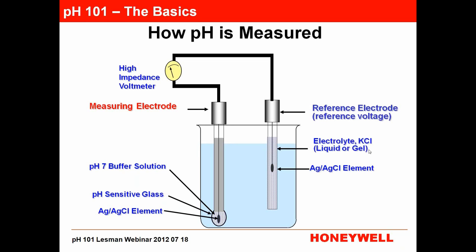We put the reference wire into a potassium chloride liquid or gel, which fixes the voltage potential at the reference electrode so it stays constant. As long as it's constant, it can be compared to the varying voltage of the measuring electrode. Without a connection between the measuring and reference electrodes, we have to add a porous liquid junction that allows electrical current flow between the measuring electrode through the process fluid and up to the reference electrode — through the gel electrolyte — so that current flows and you can see the pH at your instrument.